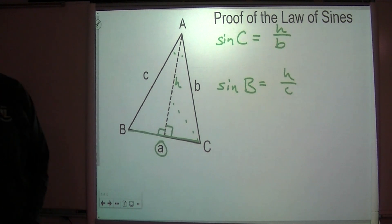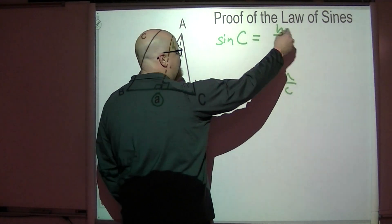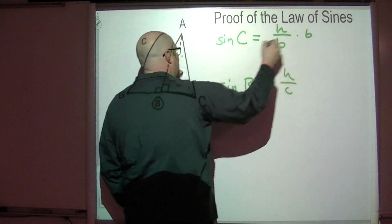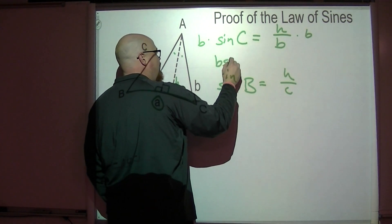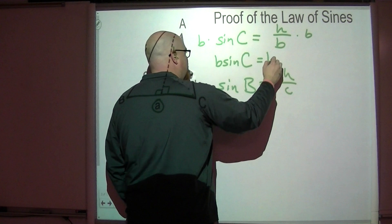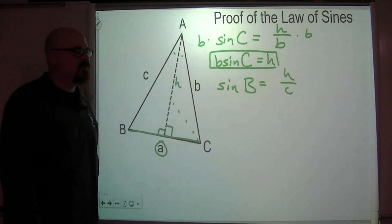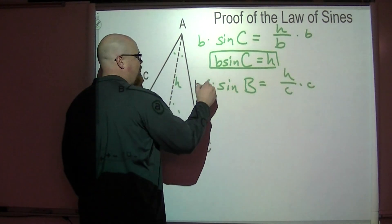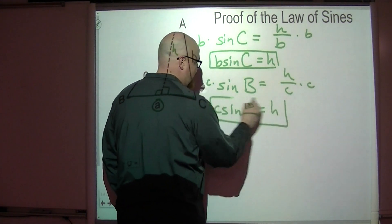Now both of those relationships involve the variable H. So I could solve for H in this problem by multiplying both sides by B, and I'd end up with this expression. That's not the law of sines, don't stop just yet. But if I did the same thing here and multiplied by C, I'd get C times the sine of B is also equal to H.